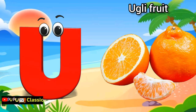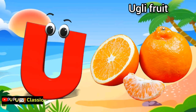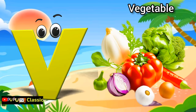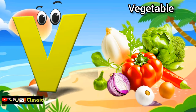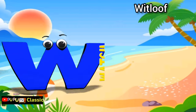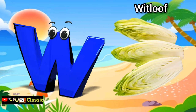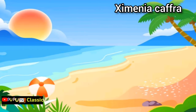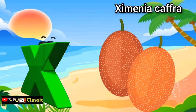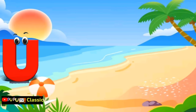U is for ugly fruit, ugly fruit. V is for vegetables, vegetables. W is for whitloaf, whitloaf. X is for zymenia caff, zymenia caff.